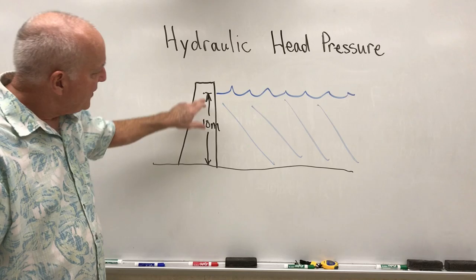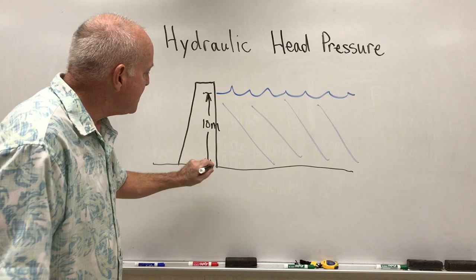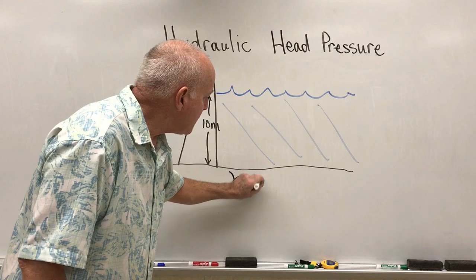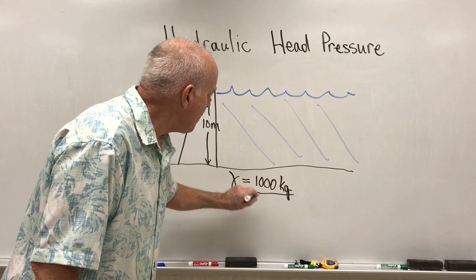So let's imagine that we have a dam that has 10 meters of water on top of it. We know that the density of water is going to be equal to 1,000 kilograms per meter cubed.